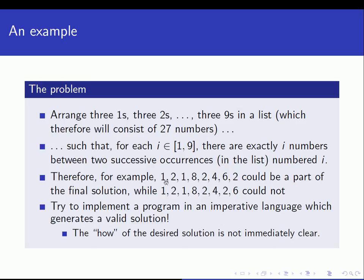So we get 1, 2, 1 — that's fine. If we have the number 2 occurring, then we need to have two numbers before 2 occurs again, and that's true as well. When the second 2 appears, we need to have two numbers before the third instance of 2, and so on. This would be a part of a solution. Whereas the sequence 1, 2, 1, 8, 2, 4, 2, 6 is not a valid solution, because between the sequence 2, 4, 2 we don't have two numbers occurring between the two occurrences of 2.